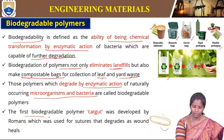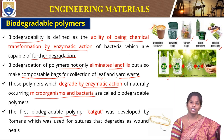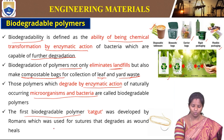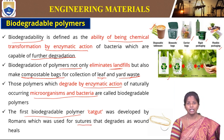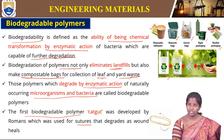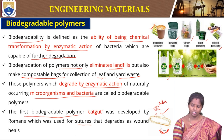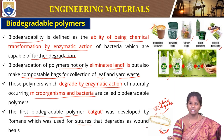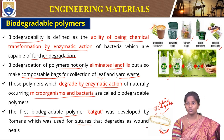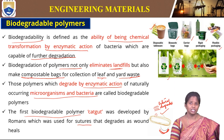The first biodegradable polymer is catgut, which was developed by Romans and used as sutures that degrade as the wound heals. This is the needle, and this is the suture used in stitching. These sutures degrade after the wound heals. This is a very good example and was the first biodegradable polymer that was discovered.